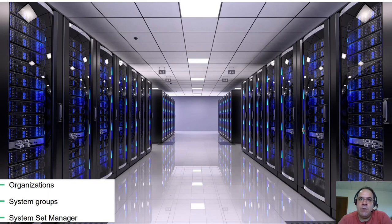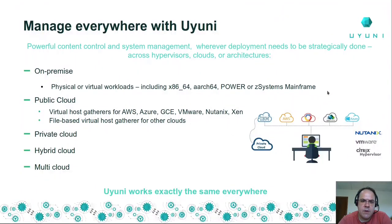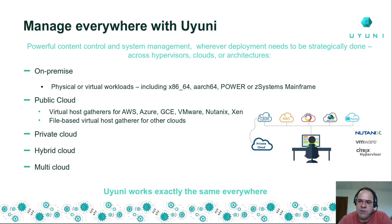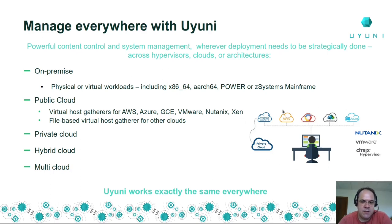You can have different Uyuni organizations, one per department, and that way you split your systems very well, or even in system groups within the same organization. Not all servers run on the same physical location — some are on-premise, some are on public cloud, some are on private cloud, some are bare metal, others are on-premise virtual machines running on a Uyuni-managed KVM server, some are VMs running on cloud or VMware. Joe doesn't really care where his servers are since Uyuni is completely platform agnostic. With a single Uyuni server, he can discover and manage clients everywhere — from AWS, Azure, Google Cloud, VMware, Nutanix, and Xen.